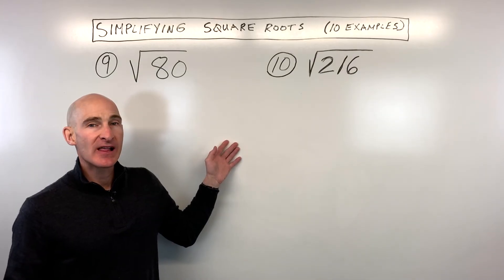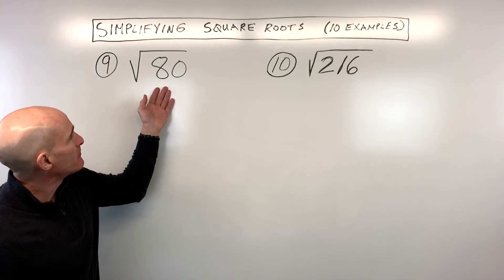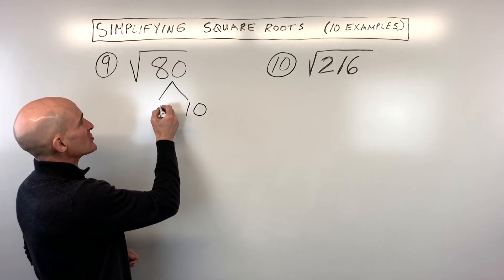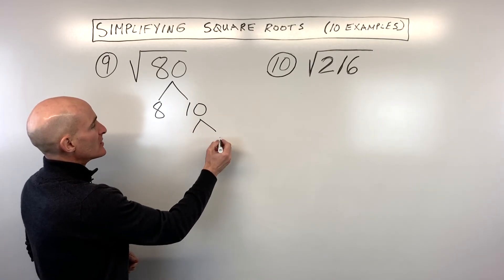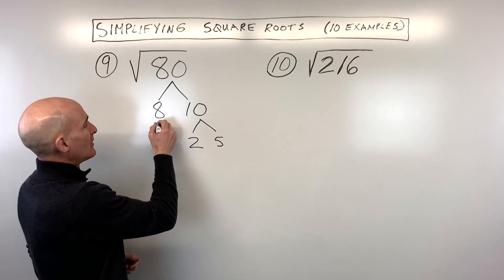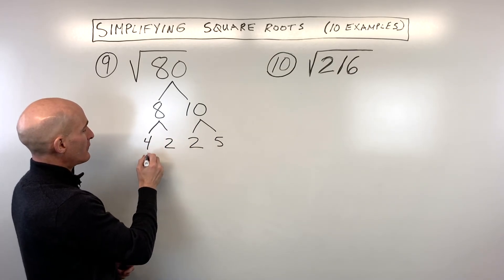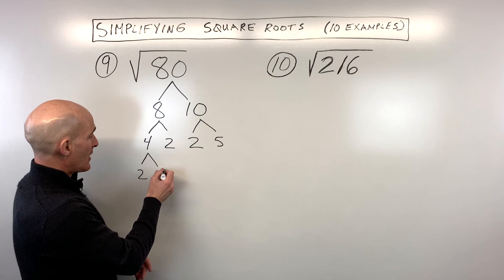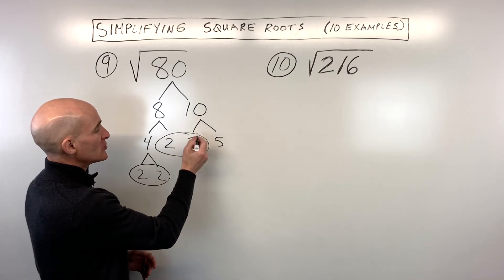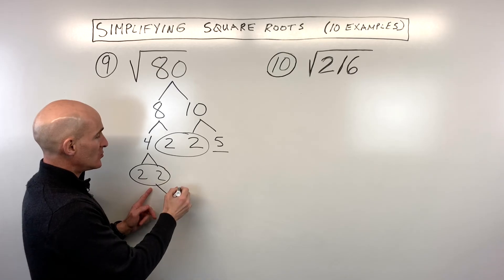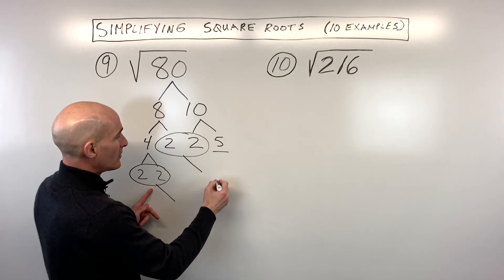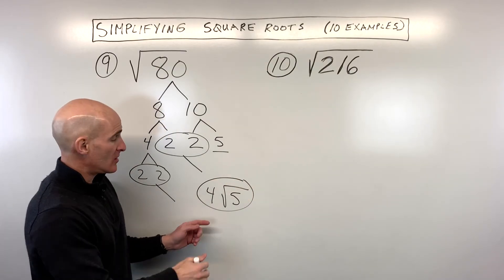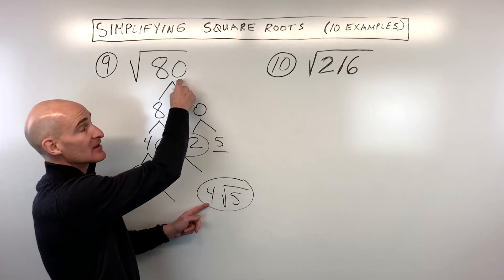See if you can test yourself on the next one: the square root of 80. I notice it ends in 0, so we can divide by 10: 10 times 8 is 80. 10 is 2 times 5, and 8 is 2 times 4, and 4 is 2 times 2. Looking for pairs: a pair of 2s and another pair of 2s, with a 5 left over. So we get 2 times 2, which is 4, out front — and 5 stays underneath — giving us 4√5. Check: 4 squared is 16 times 5 gives back 80.